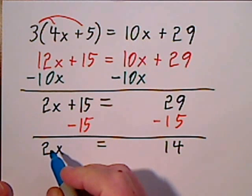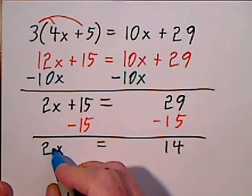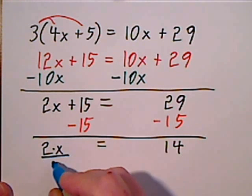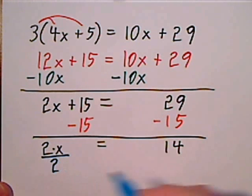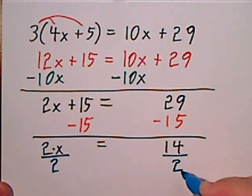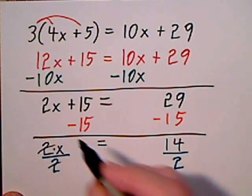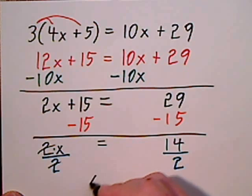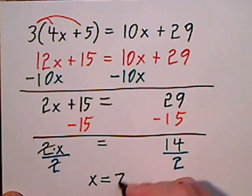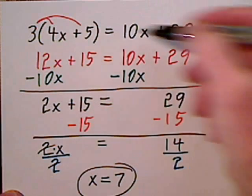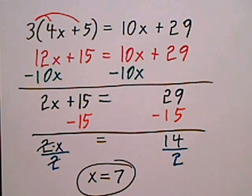One more step to get x by itself — you want to get rid of the 2. It's held by multiplication, so the opposite operation is division. Divide by 2 on both sides. 2 goes into 2 once, so you have 1x, and that's 7. You could check this answer by plugging it in and you will get a true statement.